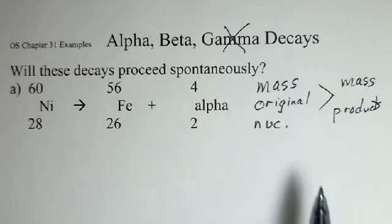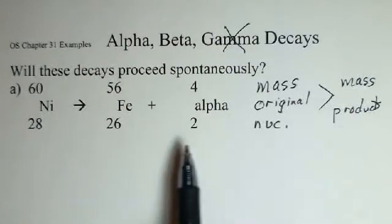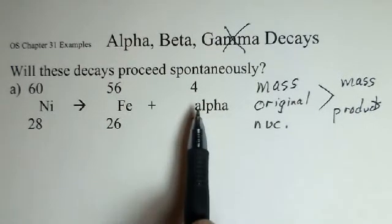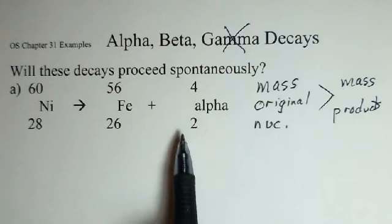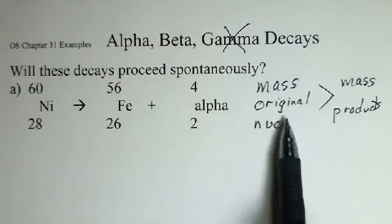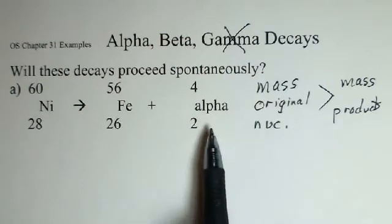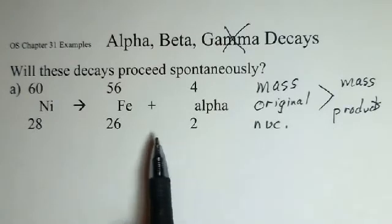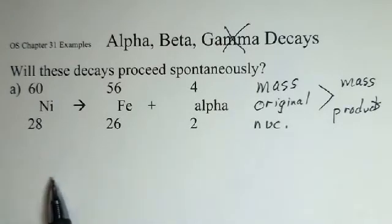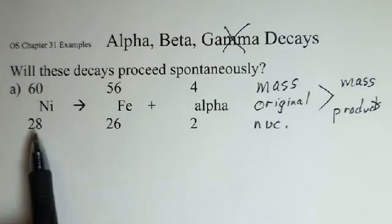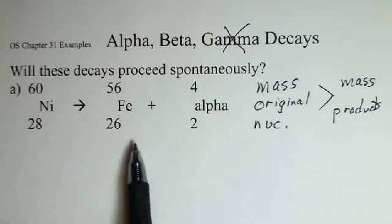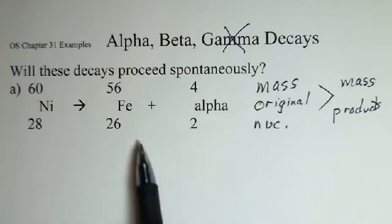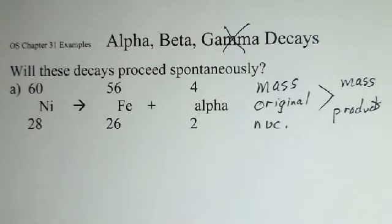There'll be mass available to create the products and have some mass left over to give them kinetic energy. If there's more mass in the products in some proposed decay, then this will not be spontaneous. We would have to add some extra energy to the starting nucleus to allow mass to be created and exist in the products.